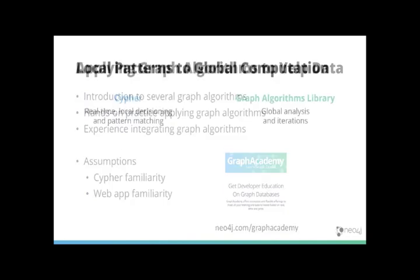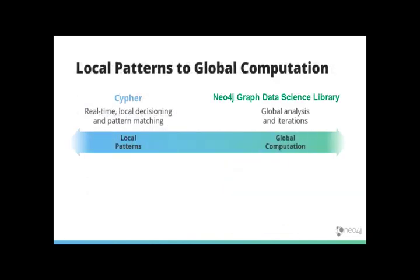Now you may be wondering when should I use cipher and when should I use graph algorithms? It's not a black and white science, there's a continuum and you can use these different tools to actually complement each other. For cipher, you're probably considering real-time analysis, some local decisions, trying to match a pattern.